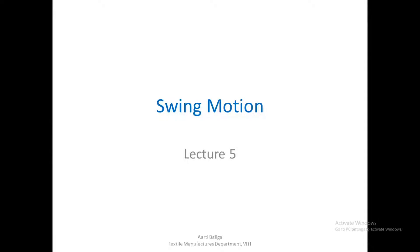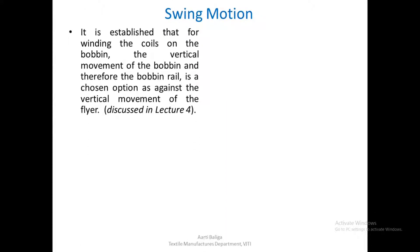Hello. Today we shall see the swing motion. In the earlier lecture it has been established that for winding the coils on the bobbin, the vertical movement of the bobbin and therefore the bobbin rail is a chosen option, as against the vertical movement of the flyer.